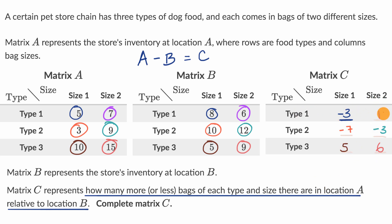So we can see that, for example, type one, size two, we have one more in store A than we have in store B. But if we think about type two, size one, it shows us that store A has actually seven fewer of that than store B does.